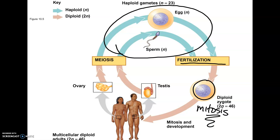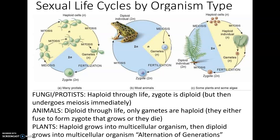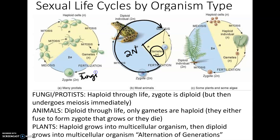Other organisms have different life cycles. In mammals and vertebrate animals, we are diploid our whole life and only gametes are haploid. In protists and fungi, however, the organism itself is actually haploid — a mushroom is made of haploid cells. In their life cycle, two haploid cells fuse to make a zygote, which then undergoes meiosis and goes back to being haploid again.